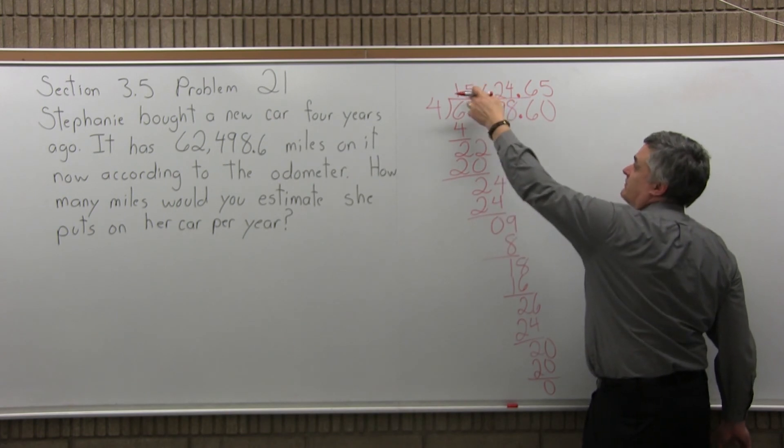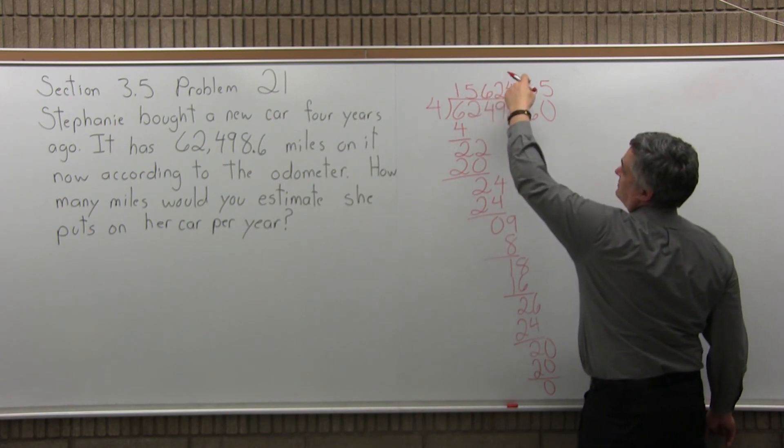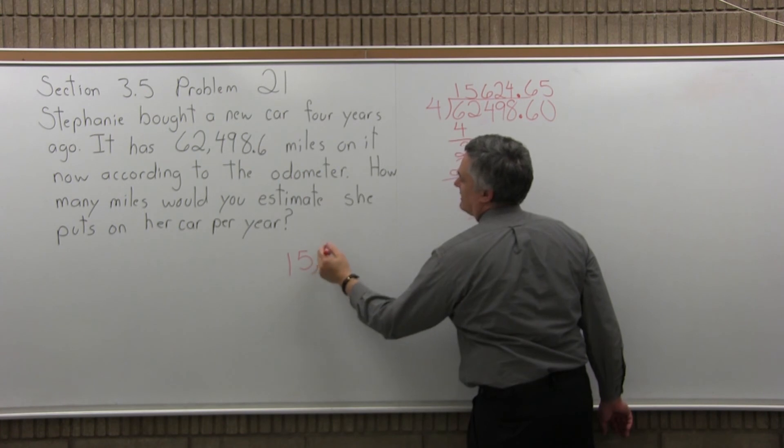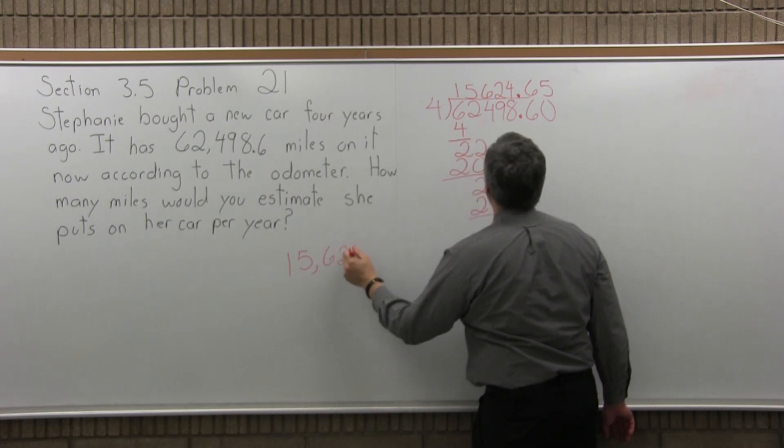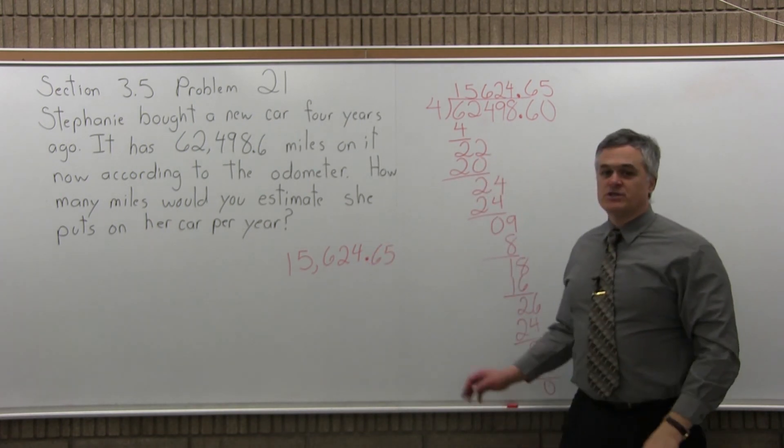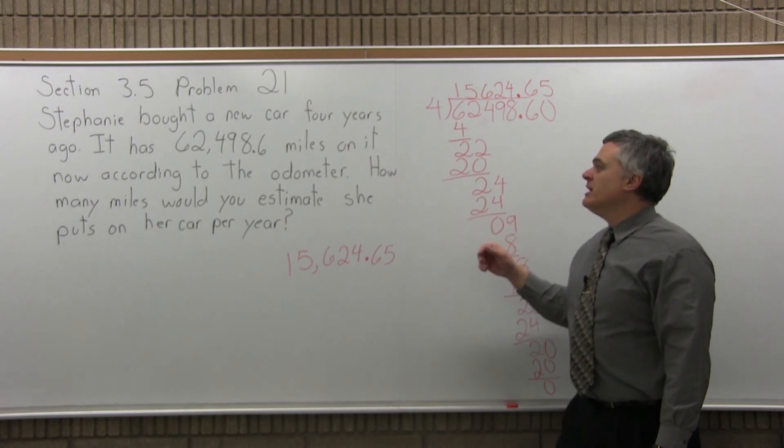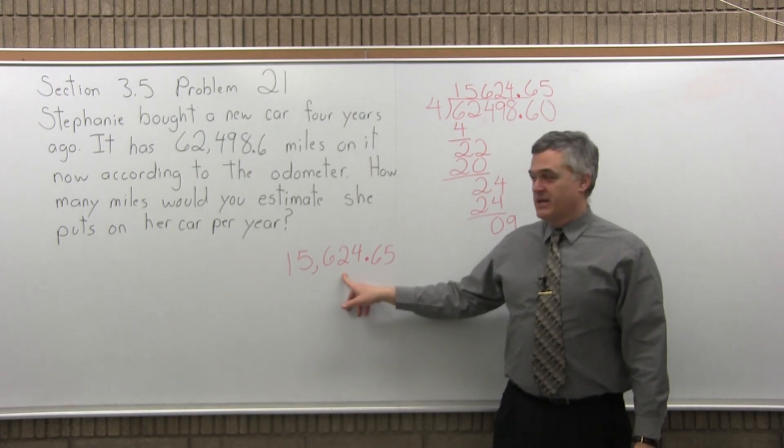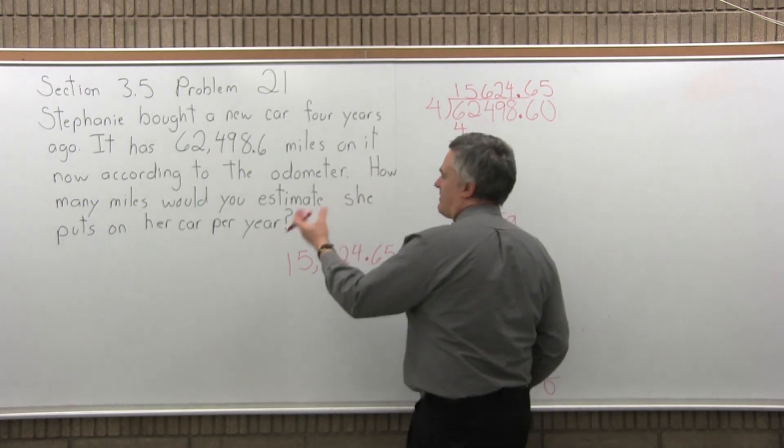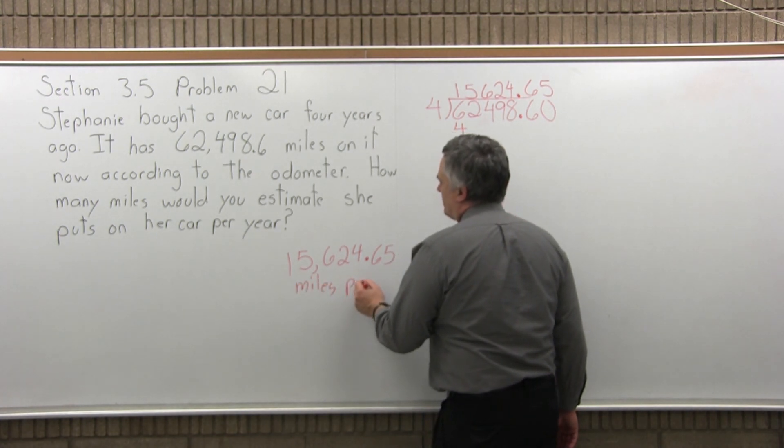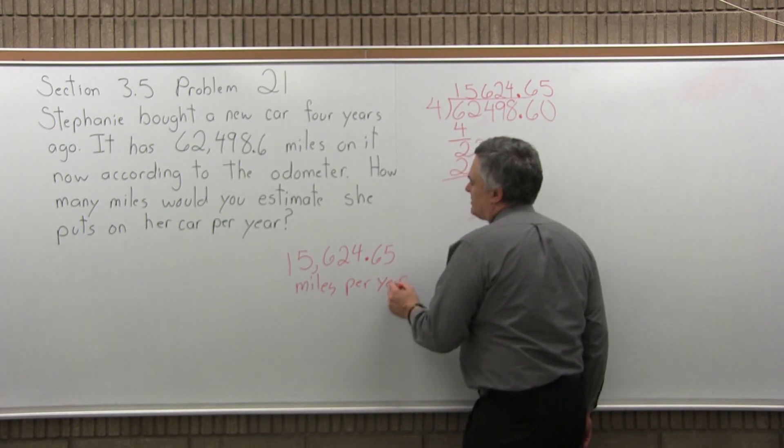So the final answer is 15,624.65, 15,000, and now I can put the comma back in, 624.65. Now, again, this was not just a division problem out of thin air. This was the answer to an application problem that had units of measure. So I can't just write a number for my answer, I have to write the number with some units of measure. It says, how many miles would you say she puts on per year? 15,624.65 miles. And you can either write miles or even better, miles per year, which is a little bit more than average.